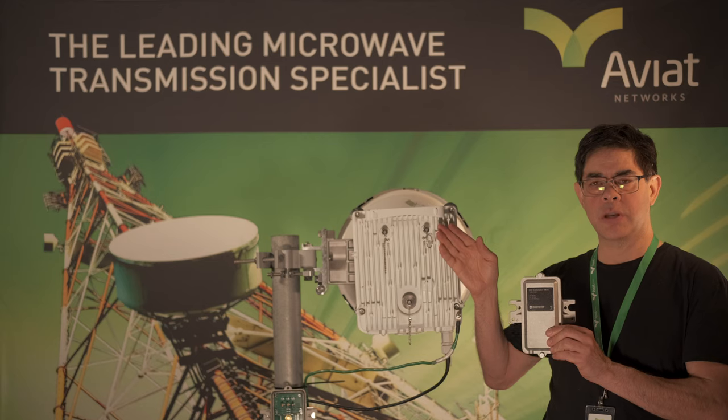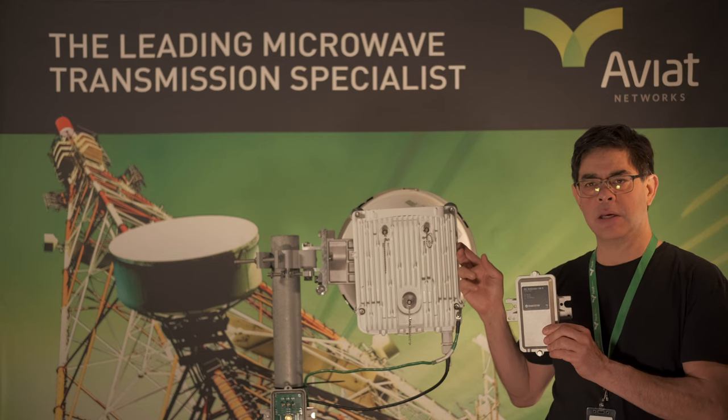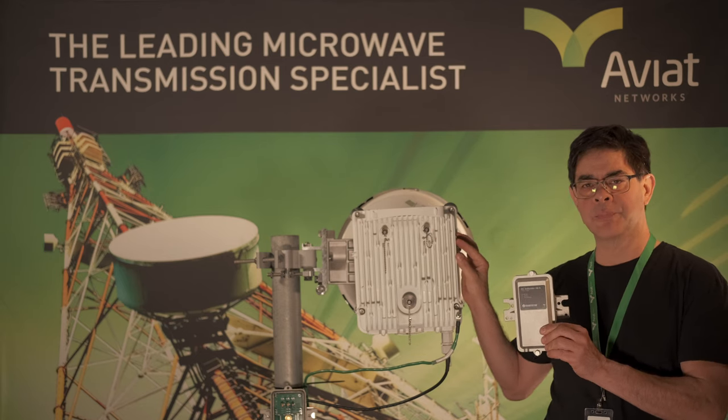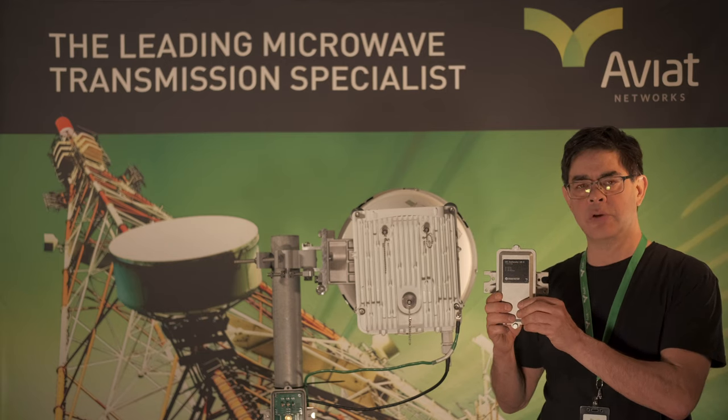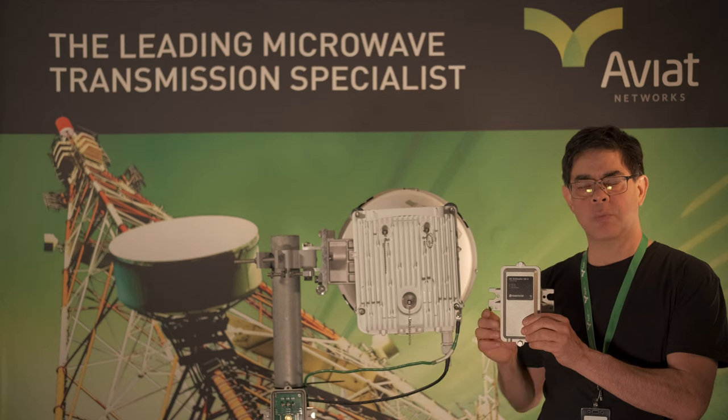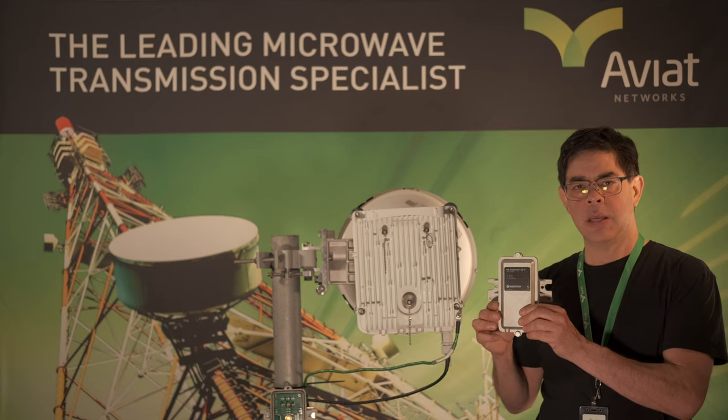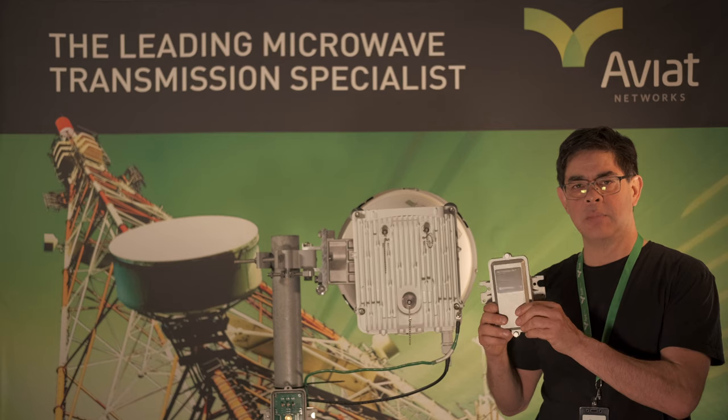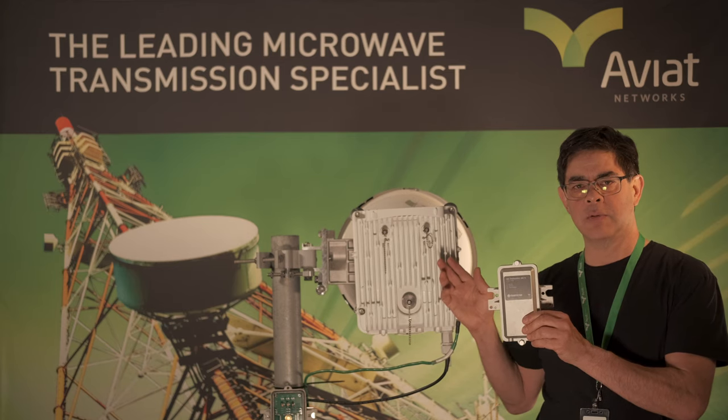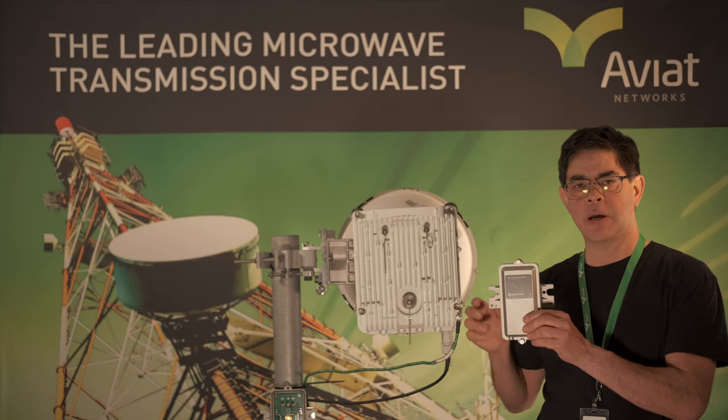Now, the WTM radios have got built-in surge protection on the DC line, but they're internal to the radio. A lot of times, people will put an external surge suppressor near the radio, and this will protect the radio from surges. In the case of a lightning strike, the surge arrestor may burn out. That can be easily replaced, rather than having to take the radio down and swap it out for a new radio.